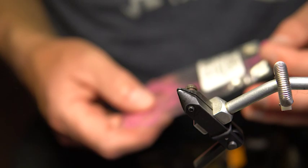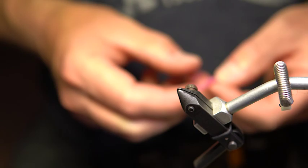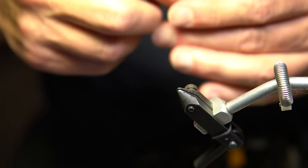Alright, let's get started here. We're gonna tie a squirmy worm. This is a fly that we use for euro nymphing. You can use it for other stuff too, probably fish it under a bobber or chuck and duck. We use it quite a bit.